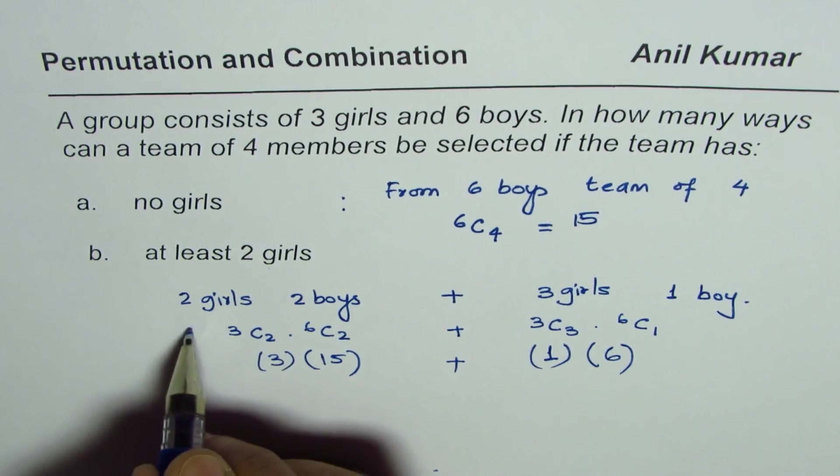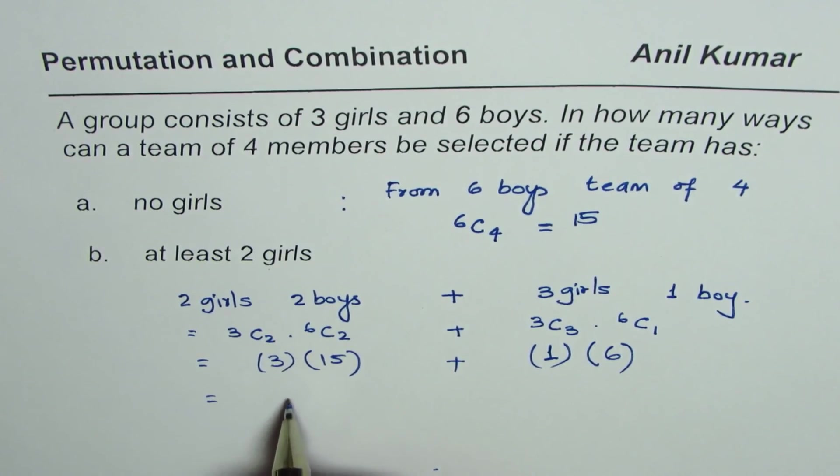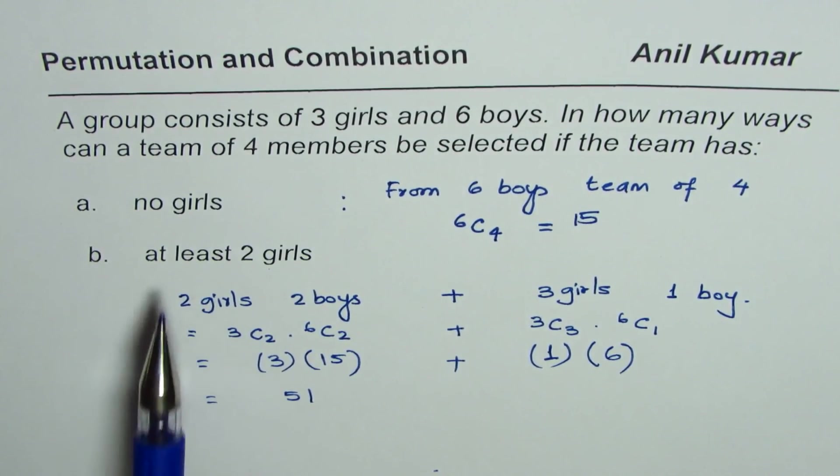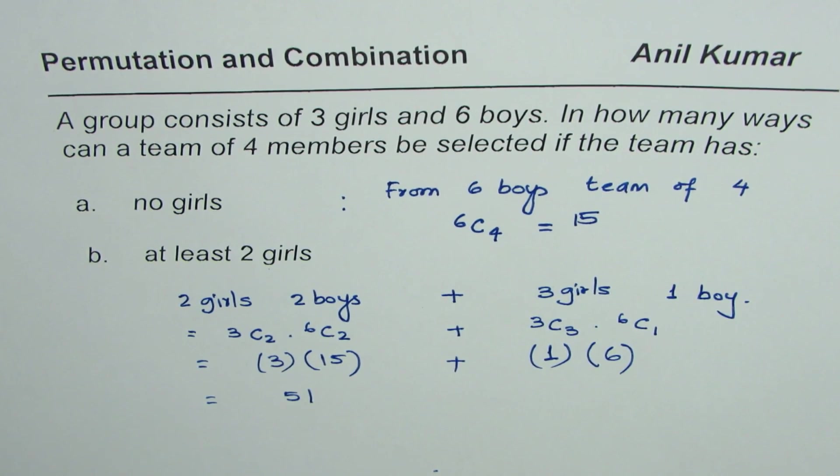So in this particular case, the answer is 51. When at least two girls are there in a four member team, then there are 51 combinations. I hope it helps you to understand the concept. Thank you and all the best.